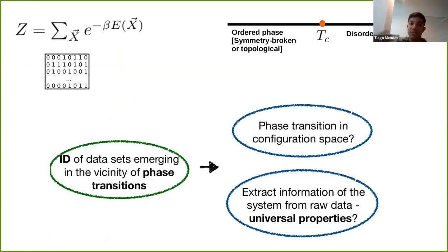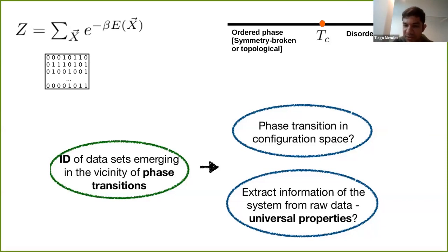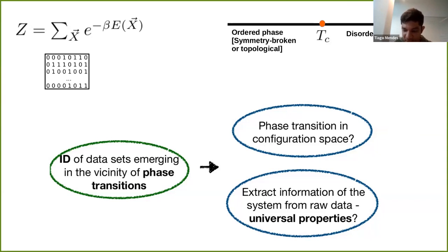The idea is that we want to study the intrinsic dimension of datasets generated by a many-body system living in a high-dimensional space. What we did in this work was to study the intrinsic dimension of datasets emerging in the vicinity of different kinds of phase transitions — both classical and quantum phase transitions.